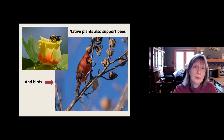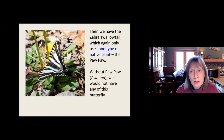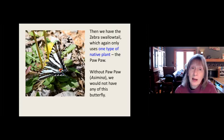Then we have the zebra swallowtail — a butterfly that only uses one type of native plant, the pawpaw. If we lost the pawpaw in our area due to development and hadn't added it back to our gardens, we wouldn't have this butterfly at all, because it wouldn't be able to lay its eggs and create the next generation.